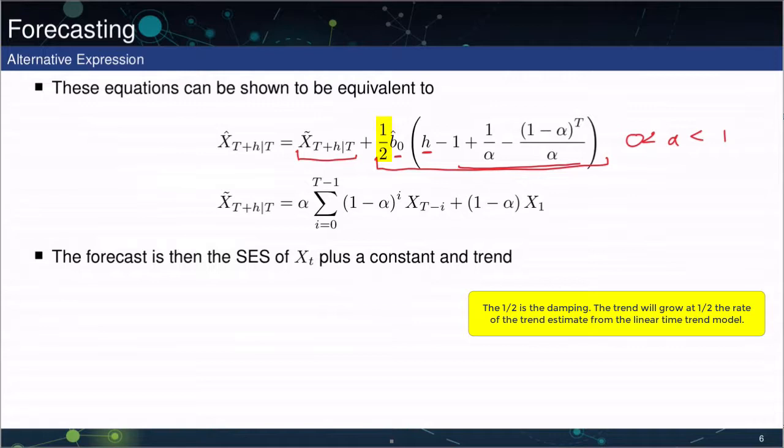The second part of the forecast is to look at this X tilde t plus h. That turns out to be just a completely standard SES for the original data. So this is just the original X data. So you don't need to do any sort of fitting of the theta line or anything.